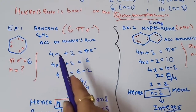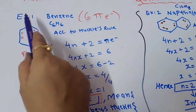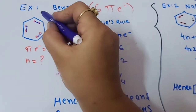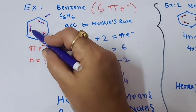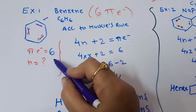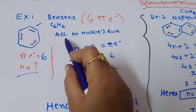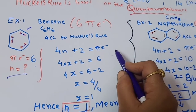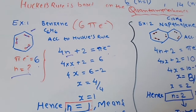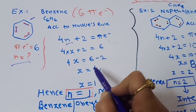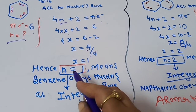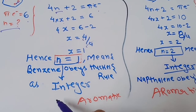First example is benzene, formula C6H6. There are 3 double bonds, and each bond is made up of 2 electrons, so the total pi electrons are 6. Using Huckel's rule: 4n+2 = 6, so 4n = 4, giving n = 1. Since n equals 1, which is an integer value, benzene obeys Huckel's rule and is hence an aromatic compound.